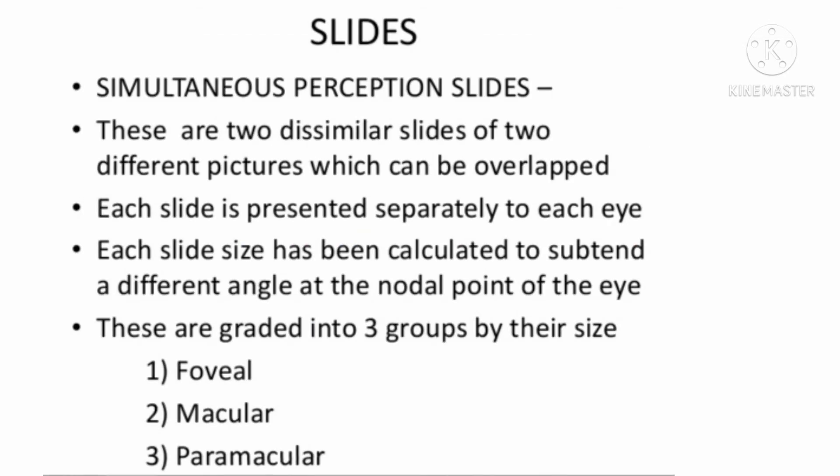Now comes the slides of the synaptophore. Simultaneous perception slides: these are two dissimilar slides of two different pictures which can be overlapped. These three groups are foveal, macular and paramacular. Each slide has different angles produced at the nodal point of eye.